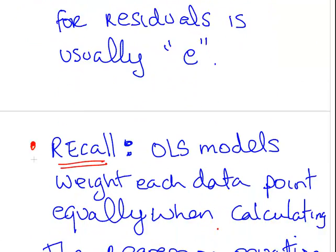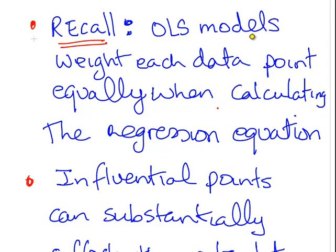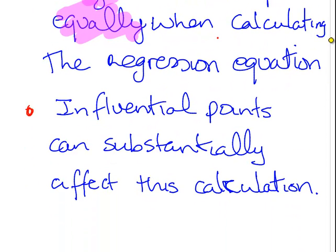Recall, in ordinary least squares, and this is something you might pass by, each data point is weighted equally when computing the regression equation. That's quite important. That means influential data points can substantially affect the calculation of the regression equation. Something you might be interested in is influential points in your model.